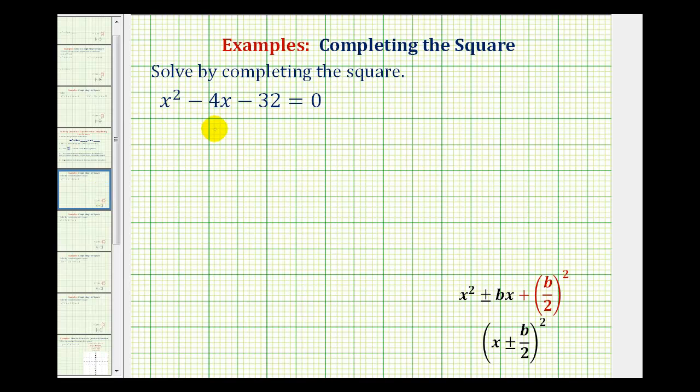So going back to our problem, to complete the square, the first step is going to be to move this constant term to the right side of the equation. So we're going to add 32 to both sides of the equation.